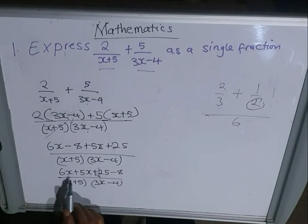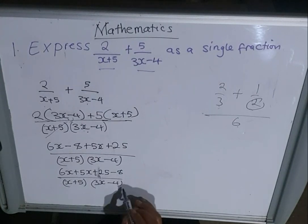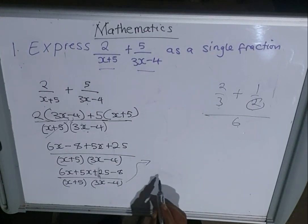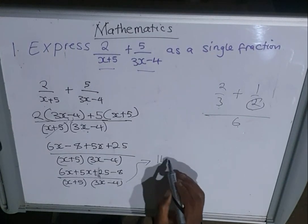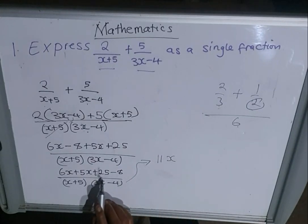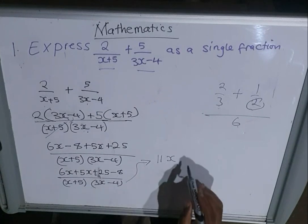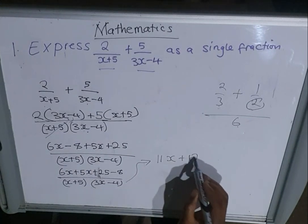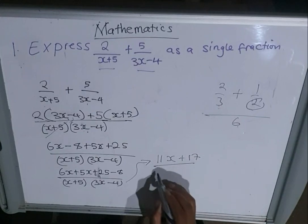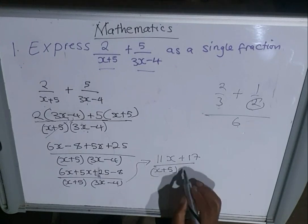So we have 6x plus 5x which is giving us 11x. And we have 25 minus 8, so here we are subtracting. 25 minus 8 we are getting 17, which is positive 17, over the denominator at the bottom (x+5)(3x-4). So this becomes the answer for this particular question.